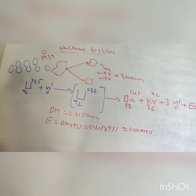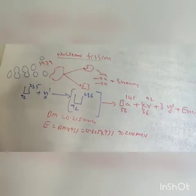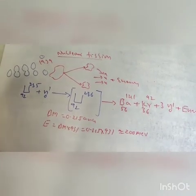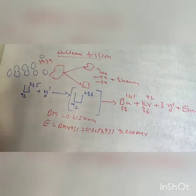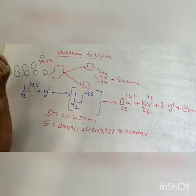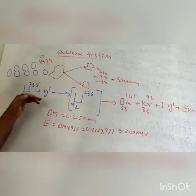Nuclear fission. This process was determined by Otto Hahn and Strassman in 1939. In this nuclear fission reaction, heavy nucleus like uranium is used.